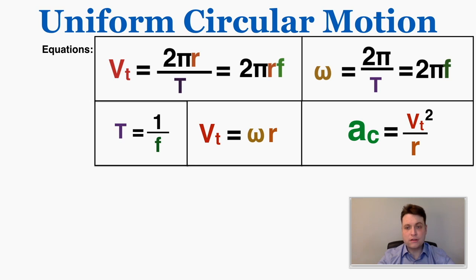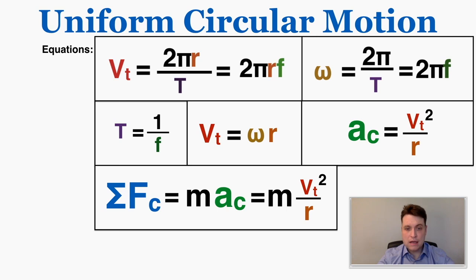The proof for centripetal acceleration is a bit complicated, but it's in the video description if you're interested. Centripetal acceleration equals the tangential velocity squared over r: a_c = v² / r. The centripetal force is the net force, so just like in straight-line physics where F_net = ma, the centripetal force equals mass times centripetal acceleration: F_c = m × v² / r.